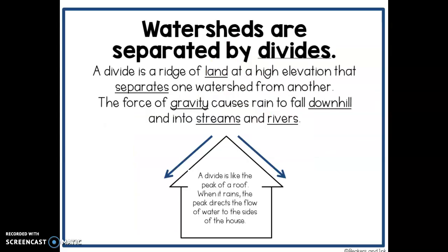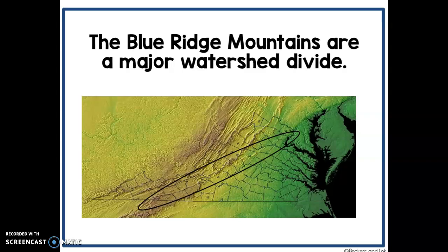Watersheds are separated by divides. Think about a divide as the peak of a roof on a house — when it rains, the peak directs the flow of water to that side of the house. A divide is a ridge of land at a high elevation and it separates one watershed from another. The force of gravity causes the rain to fall downhill and into the streams and rivers. Most of our divides are things like mountain ranges — the Blue Ridge Mountains are a major watershed divide. Water that flows on the eastern part of the mountain is going to flow towards maybe the Chesapeake Bay or the Albemarle Sound, while water that lands on the western side is going to go towards the Mississippi River.